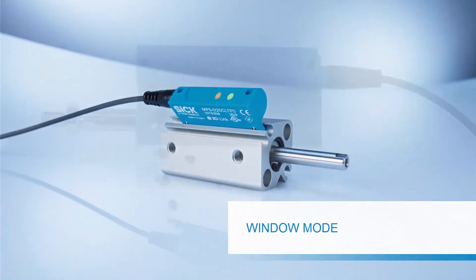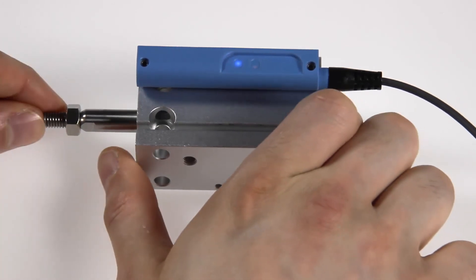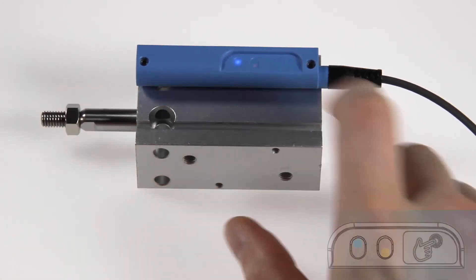Window mode. When using the window mode, a window between an upper and a lower threshold is defined. The switching output is active when the piston is located between the two thresholds. In order to set the first threshold, move the piston into the first position.